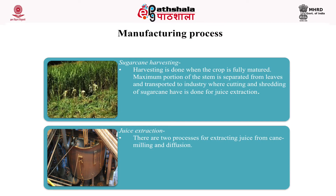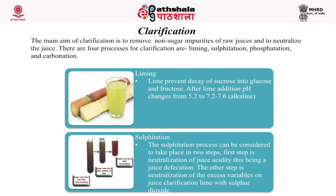In the sugar industry, various processes occur sequentially. Harvesting is done when the crop is fully matured; the maximum portion of the stem is separated from leaves and transported to industry where cutting and shredding of sugarcane is done for juice extraction. There are two processes for extracting juice from cane: milling and diffusion.